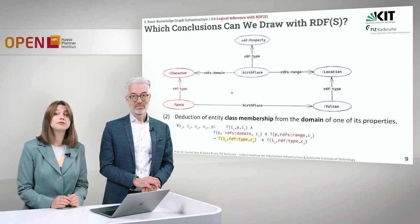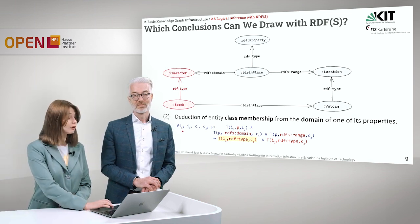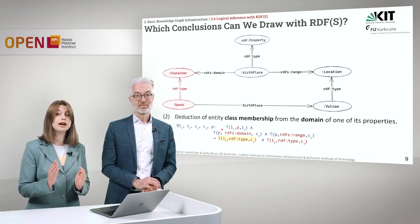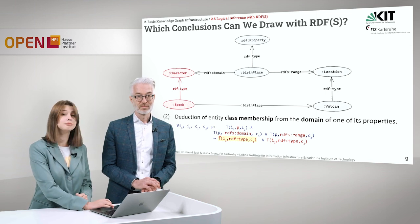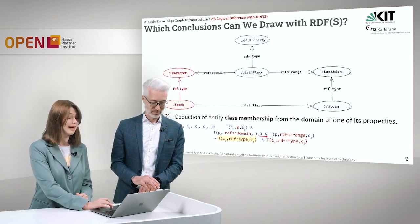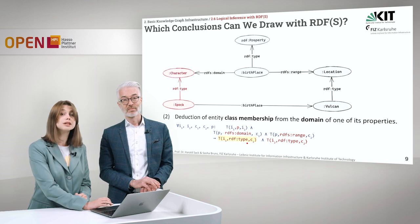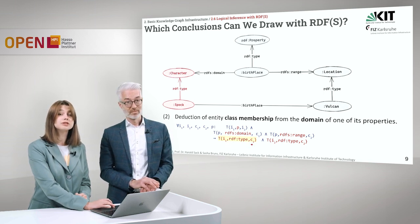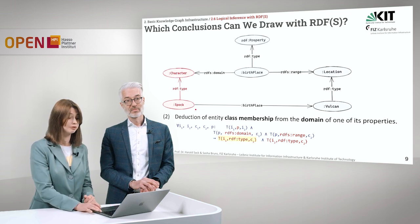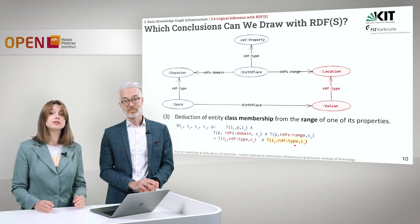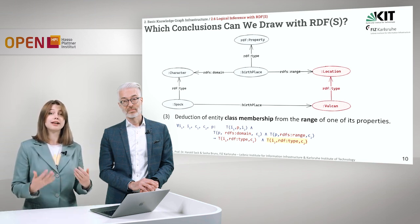Let's take a look at the formal definition. For all individuals I1 and I2, and for classes C1 and C2 and the property P, if there is a triple that relates I1 and I2 via P, and also if P in domain has C1 and P in range has C2, we can say that I1 is of type C1. And of course the same holds for range: we can also say that I2 is of type C2. Like this, we can define to what class our instances belong and what kind of elements they are.